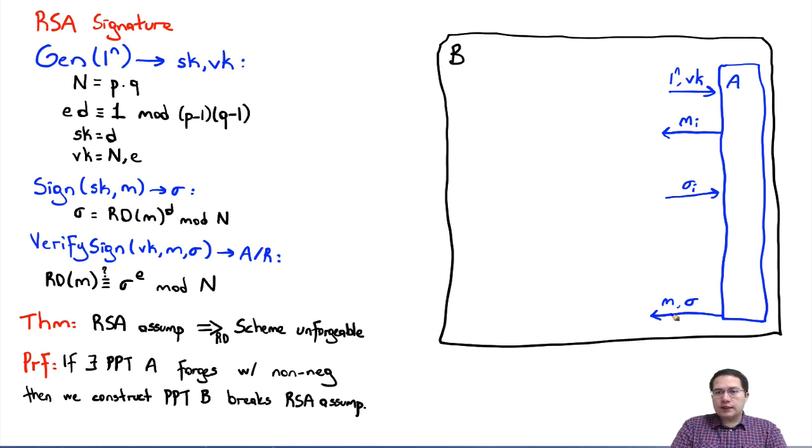Since this is a proof in the random oracle model, in addition to these, at any time during this interaction, A can query some Z_i value for the random oracle and needs to be given back the corresponding Y, which is the output of the random oracle. So this part is the random oracle queries. This part is the regular signing queries. And B needs to respond to them all.